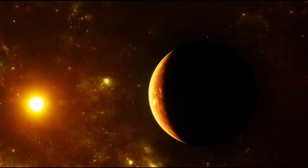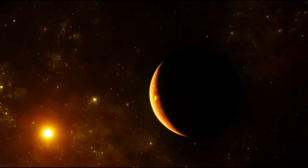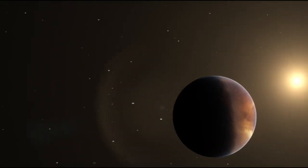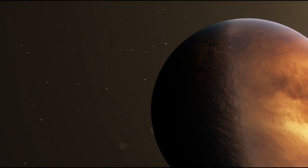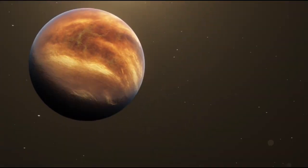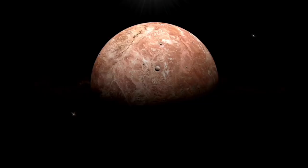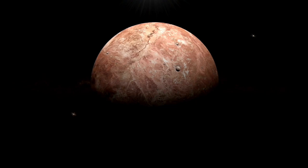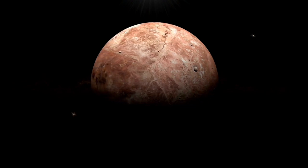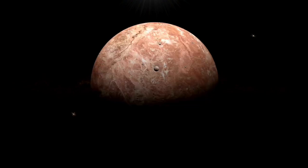Its orbital period is notably brief, lasting just 11.7 Earth days, and it orbits its star at a distance many times closer than Earth is to the sun. Consequently, one hemisphere of the planet experiences perpetual daylight, while the other remains in everlasting darkness, amplifying its alien and perhaps awe-inspiring nature.